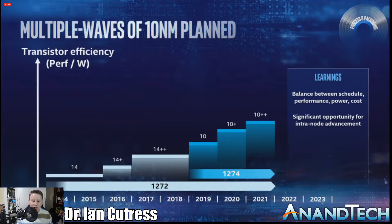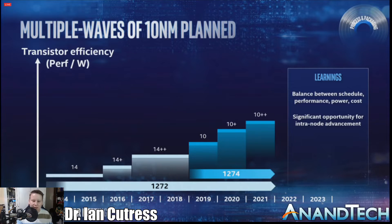These are what we call BKM updates — just implementation of new design rules to help density, voltage, or frequency, but it's not a complete process change. You can use the same design, perhaps with very minor tweaks. It's not a full front end of line, middle end of line, back end of line change, or at least not one subset of those that's typically seen going from one major process node to another. This is an optimization of the process node.